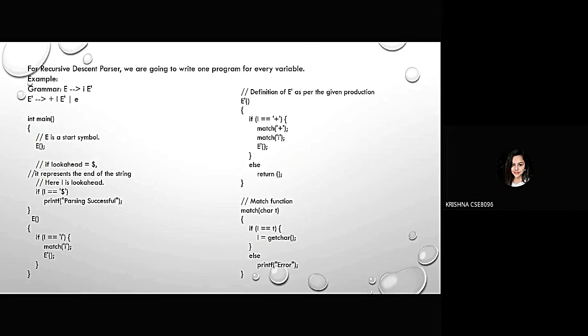Here, if l equals to equals to plus, then it will call the match method and E dash method. Otherwise, it will return all the values. Here, if l equals to equals to dollar, then it will print parsing successfully.